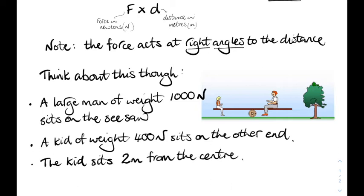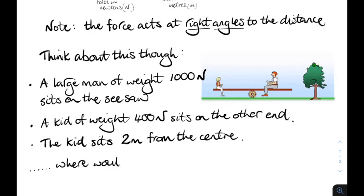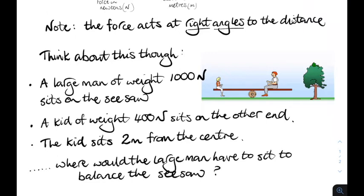Well, let's say the kid's sitting two metres away from the centre. Where's the guy going to be? The large man. He would have to sit closer to the middle.